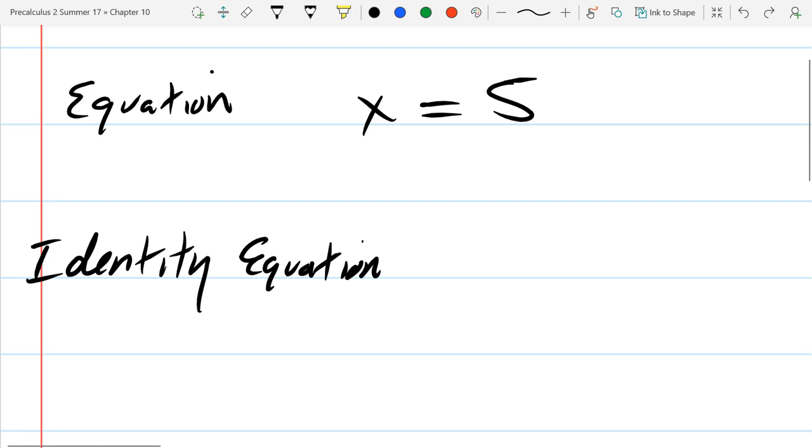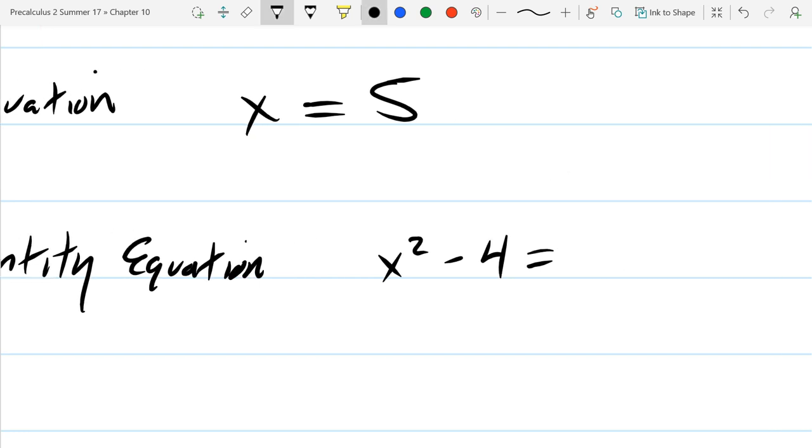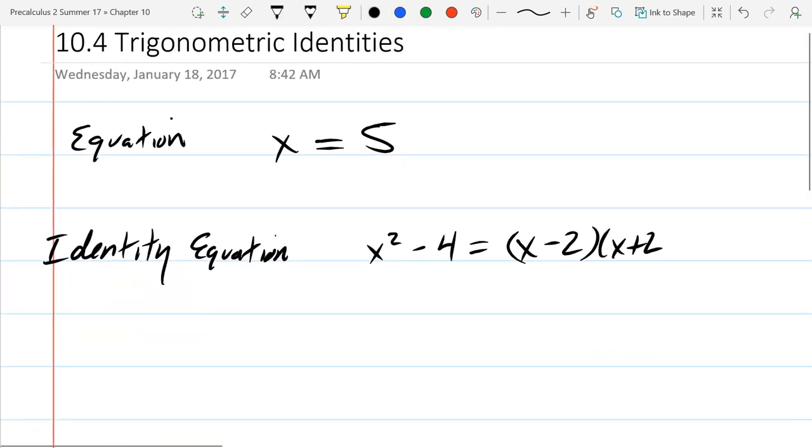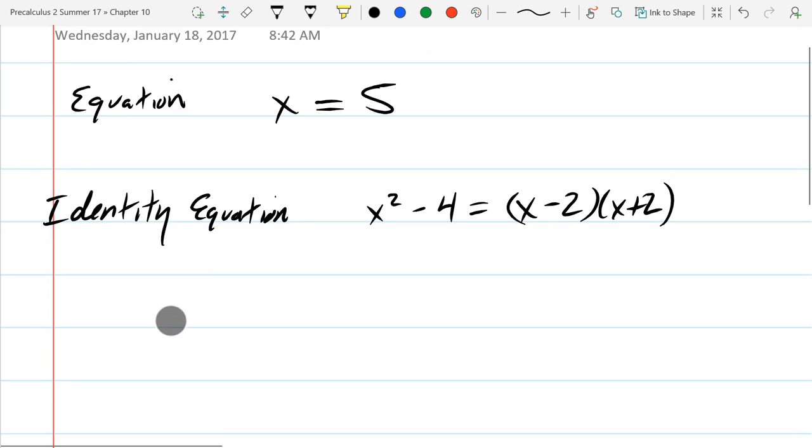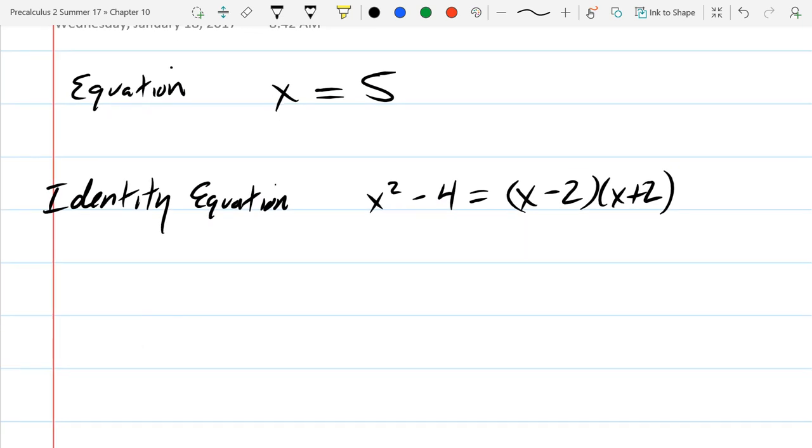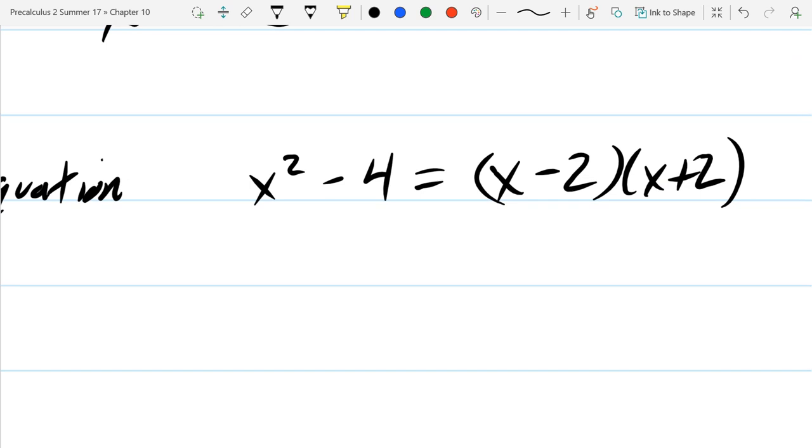Here is an easy example of an identity: x squared minus 4 equals (x minus 2) times (x plus 2). Does it matter what value x is? If x is 0, you get minus 4 on the left. If x is 0 on the right, you have 0 times negative 2 times positive 2, which is also minus 4. Turns out this equation is true for all x values.